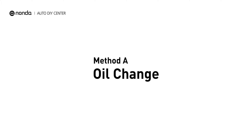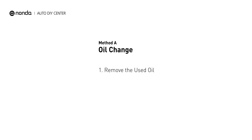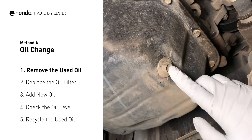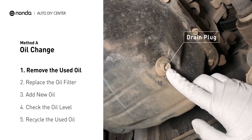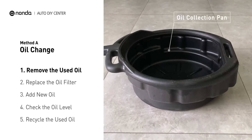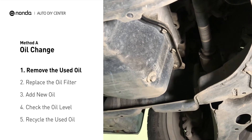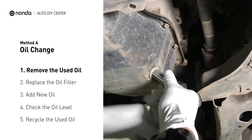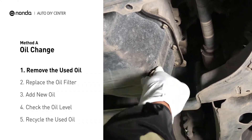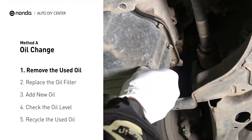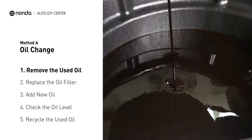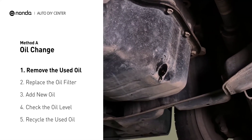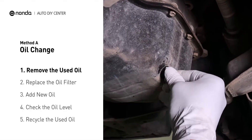Method A: Oil Change. Locate the oil drain plug on your vehicle and place an oil collection pan underneath it. Use the socket ratchet to remove the plug from the oil pan on your vehicle. Once the plug is removed, the oil should start flowing out into your collection pan. Once all the oil is drained, replace the drain plug and tighten it back on.